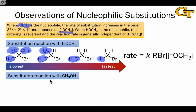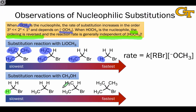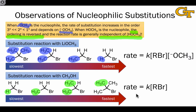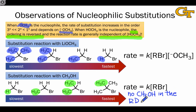When methanol — the conjugate acid of methoxide — is used as the nucleophile, we find that the dependence of rate on substitution pattern is reversed with respect to the first case, and that the reaction rate is independent of the concentration of nucleophile. The methyl halide substrate is essentially unreactive, with the rate increasing as we add alkyl groups to the electrophilic carbon. Additionally, the rate depends only on the concentration of alkyl halide. The nucleophile, methanol, in this reaction is zero order.